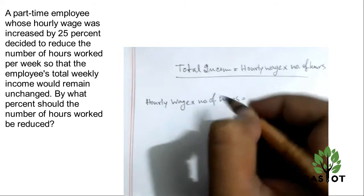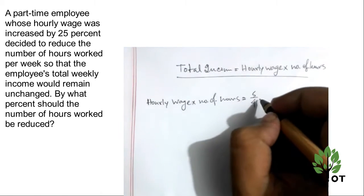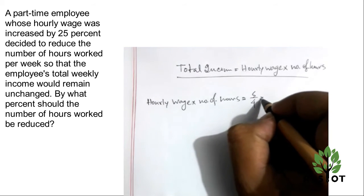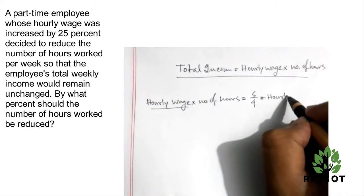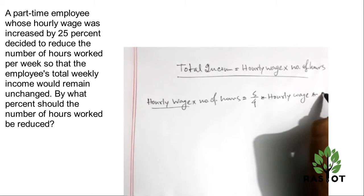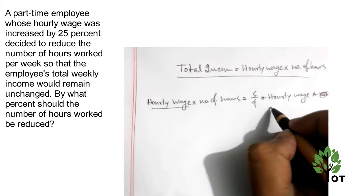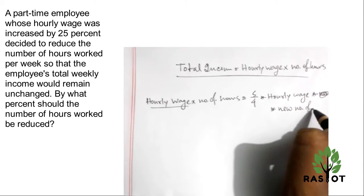times the number of hours. This will be equal to 5 fourths of the previous hourly wage times the new number of hours.